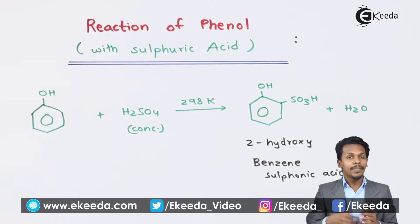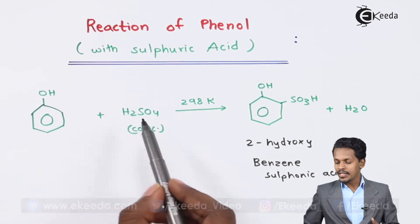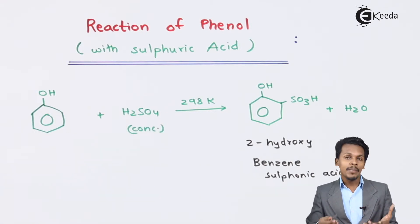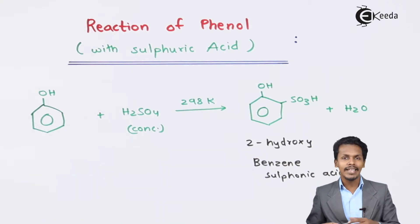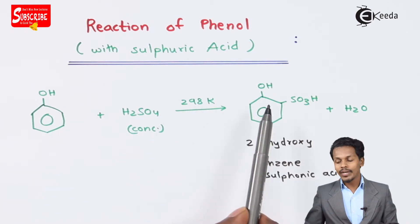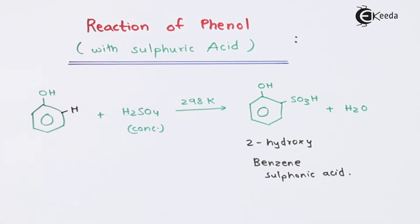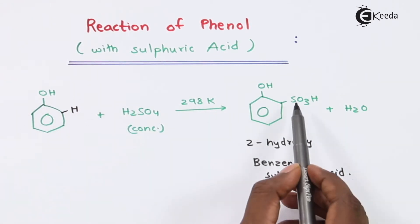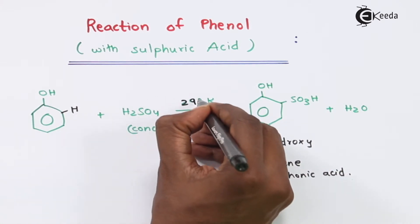The reaction of sulfuric acid will produce different products depending on the temperature. If we treat phenol with concentrated sulfuric acid at 298 Kelvin — room temperature — the product we get is 2-hydroxybenzene sulfonic acid. This occurs when the hydrogen at the ortho position is replaced by SO₃H, with water removed as a by-product.